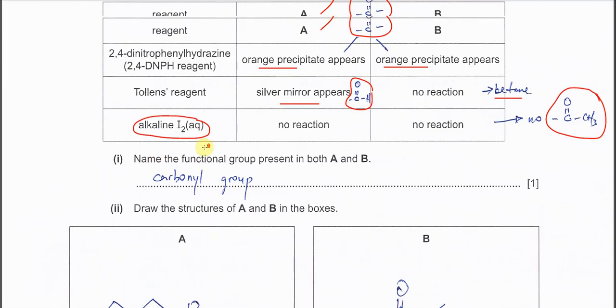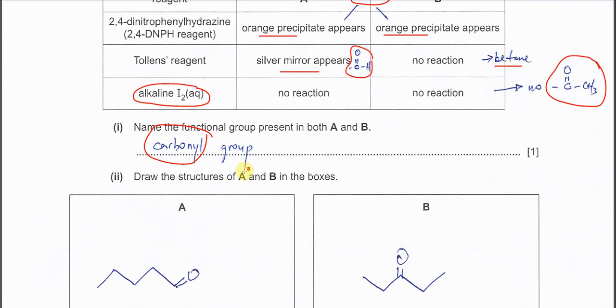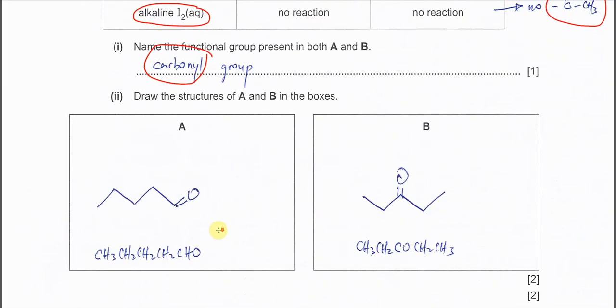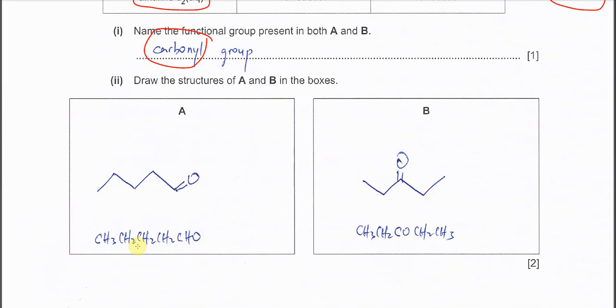Okay, name the functional group for both A and B. Carbonyl group. Draw the structure of A and B. Now it's easy. Like I told you just now, A is aldehyde. So it has a CHO group continued by the straight chain, four carbons. CH₃CH₂CH₂CH₂CHO. So this is pentanal.